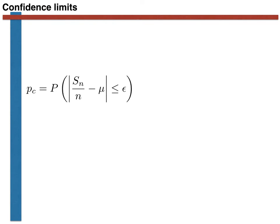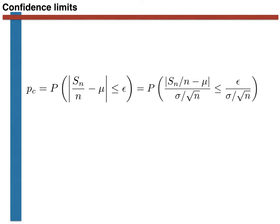We now take two simple steps in calculating this probability. In the first, we divide the two terms on either side of the inequality sign inside this probability by a factor of sigma over the square root of the number of experiments, n, for reasons that will become clear in a moment. To be clear, sigma is the square root of the variance.